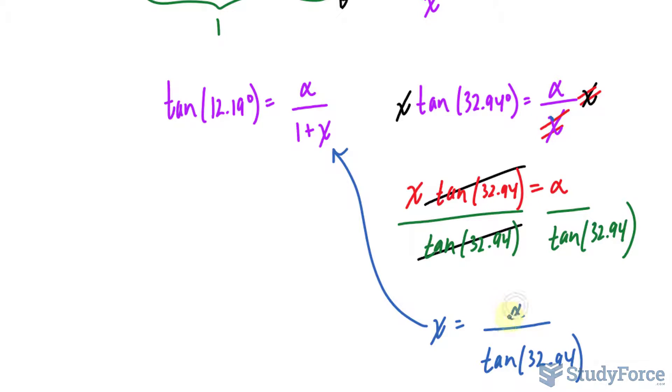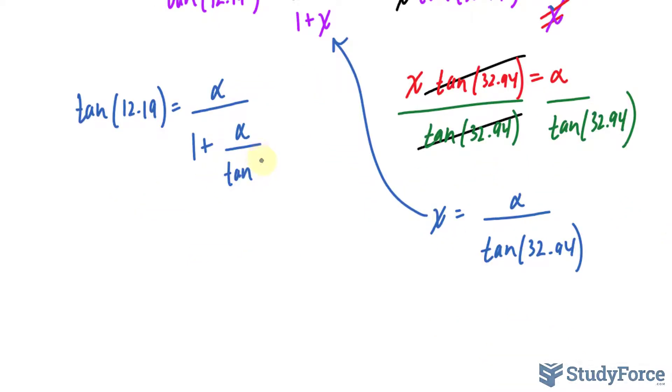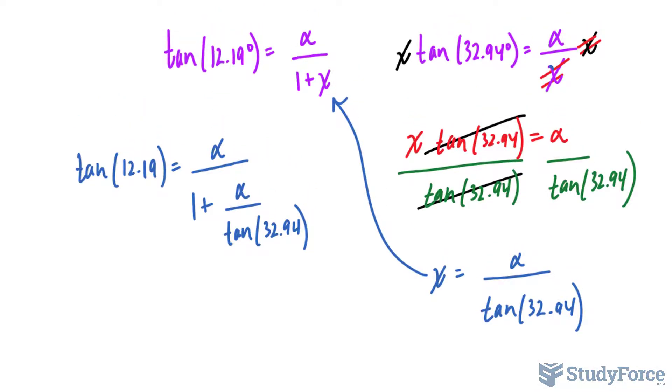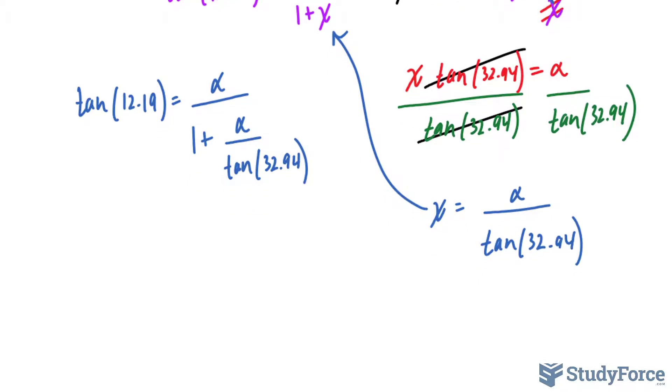So whatever this x is equal to, alpha over tangent 32.94, we place that into there. So I have tangent 12.19 again is equal to alpha over 1 plus this expression, alpha over tangent of 32.94. All we have to do now is solve for alpha. And while this may look easy, you do need to know how to manipulate equations to actually figure it out. Here's what I would do. I would start off by getting rid of this denominator. We have a pretty large denominator. And we can get rid of it by multiplying both sides by it.